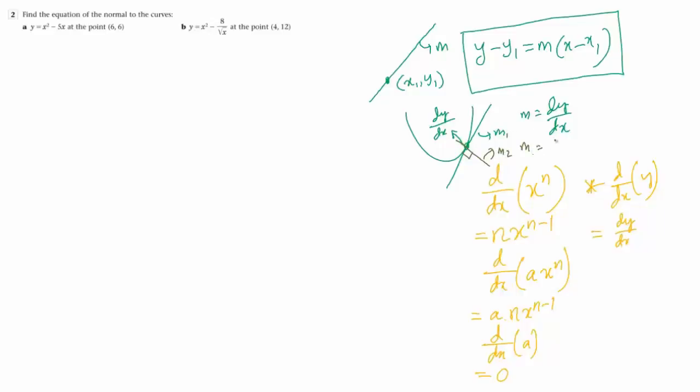In case of a normal, the gradient is a reciprocal, meaning 1 divided by that gradient, but also negative. It's a negative gradient, so minus 1 by dy/dx is the gradient. If 2 is the gradient of the curve at that particular point, the gradient of the normal is minus 1 by 2.